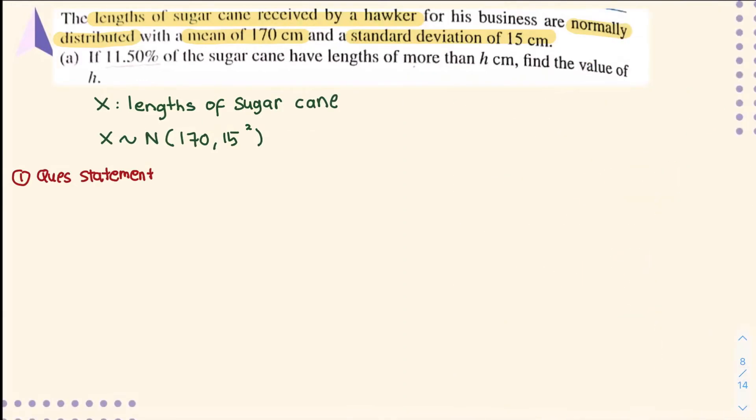So from the question, it's given that 11.5% of sugar cane have lengths more than h cm.